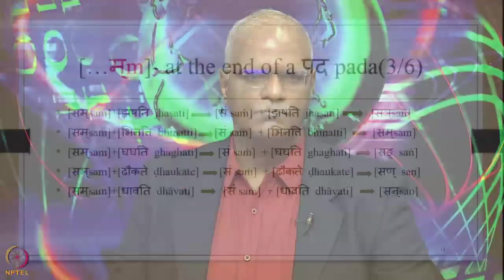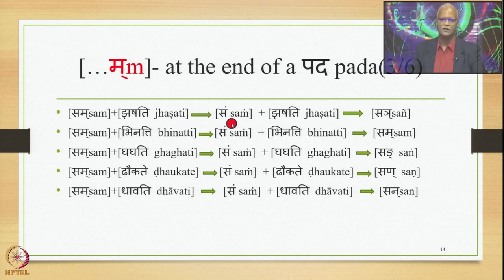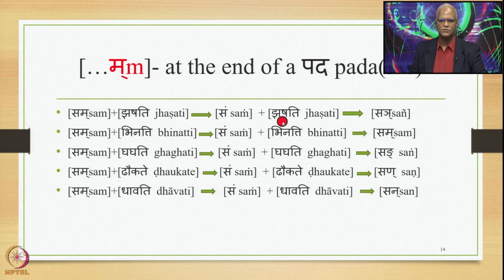Sam plus Jahshati: Ma is substituted by Anuswara by 8.3.23, giving Sam Jahshati. Then 8.4.59 applies, generating Sain Jahshati optionally, and Sam Jahshati as the other optional output.